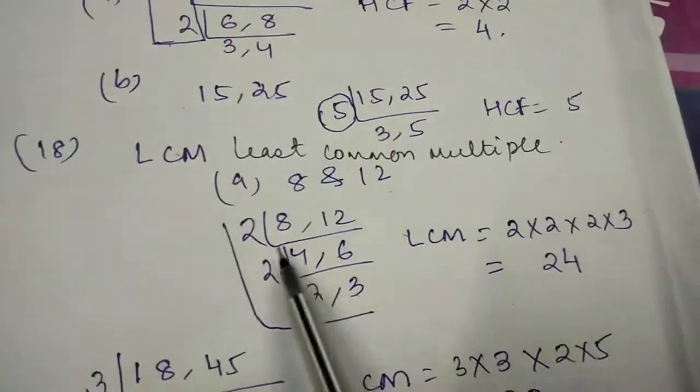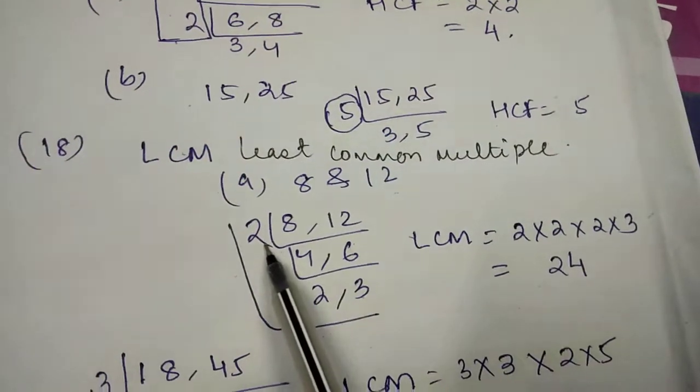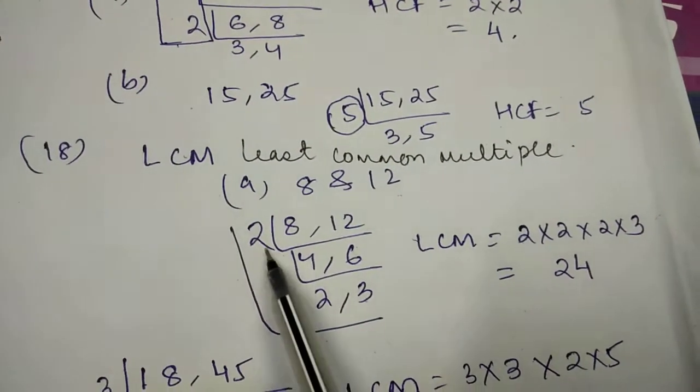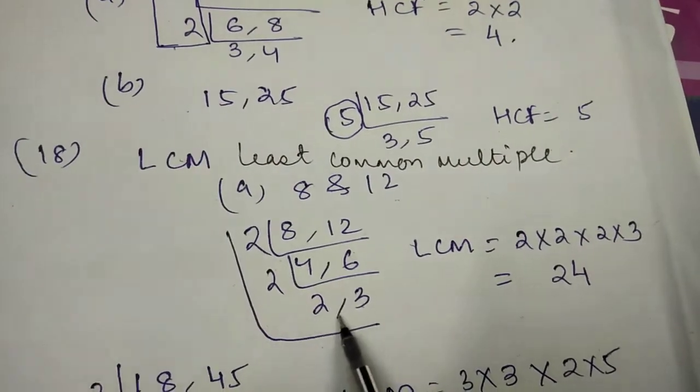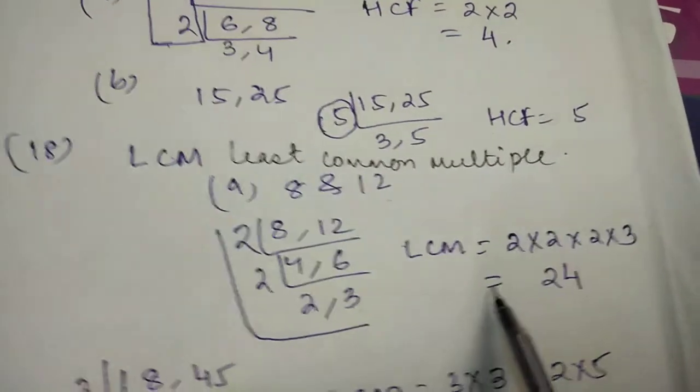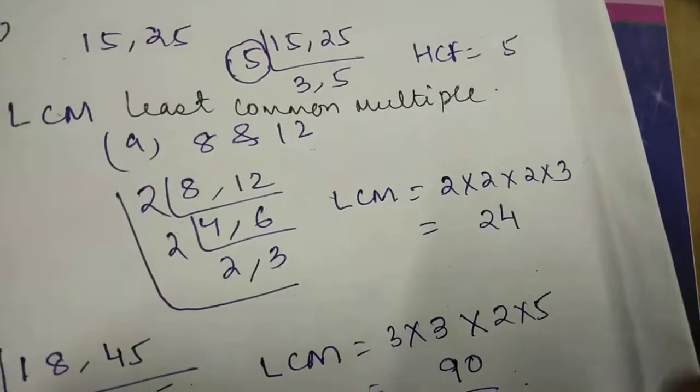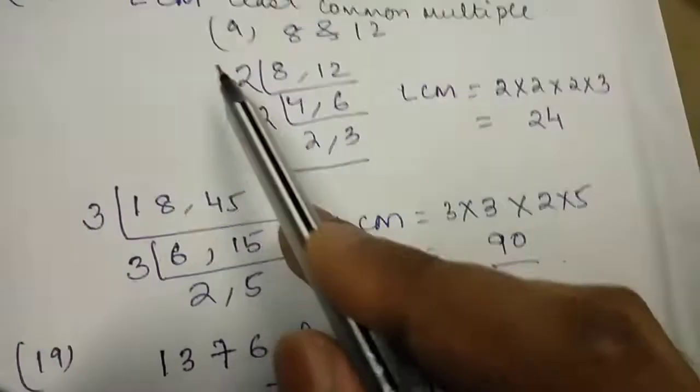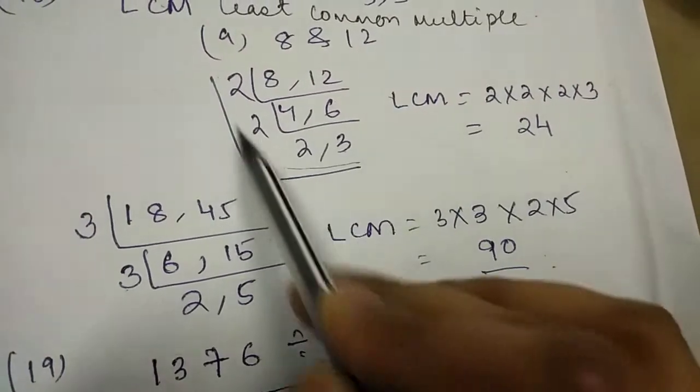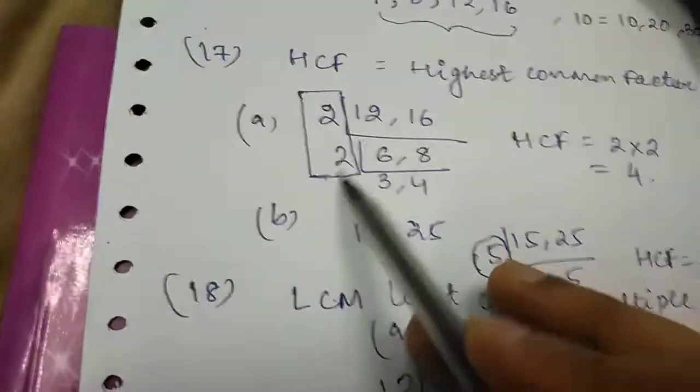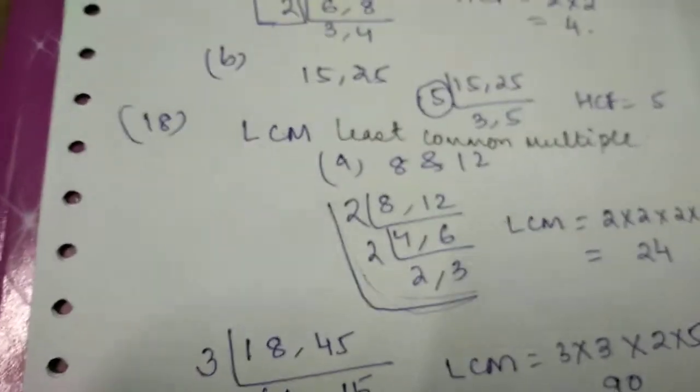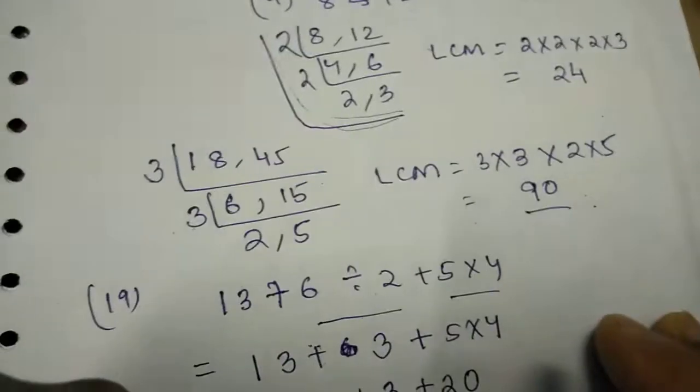We will divide by the least possible number, that is 2. So 2, 4s are 8, 2, 6s are 12, 2, 2s are 4, 2, 3s are 6. Therefore the LCM is 2 into 2 into 2 into 3 is 24. Now in the LCM, we have to multiply the whole thing, whereas in the HCF we used to do only the multiplication of this thing. Please see the difference between LCM and HCF.